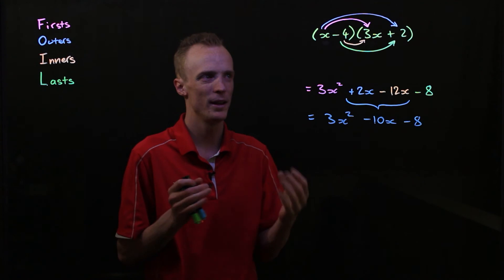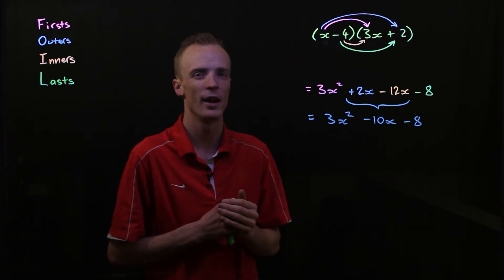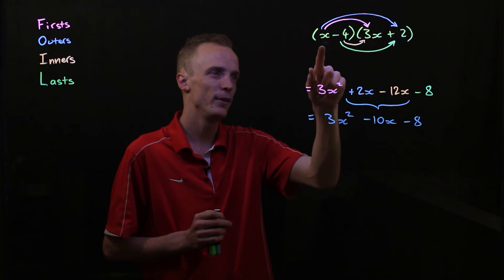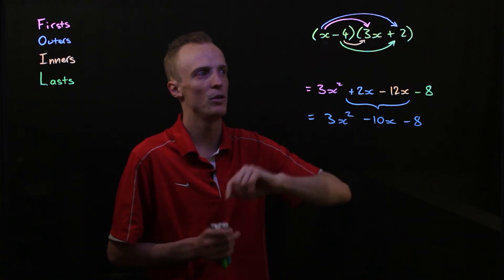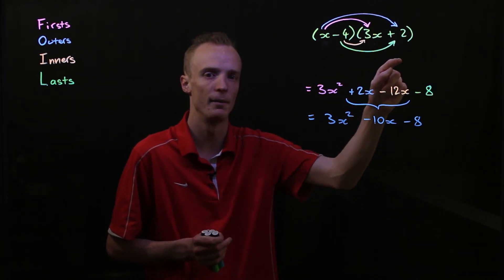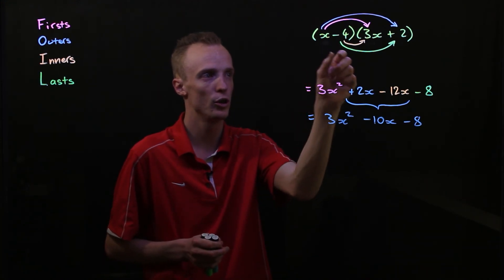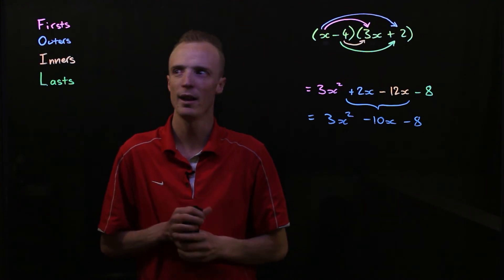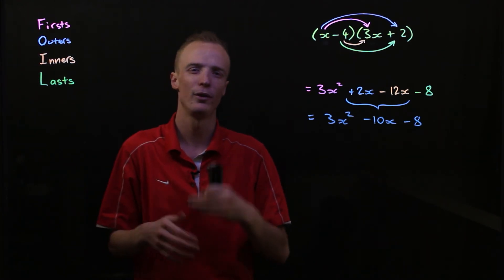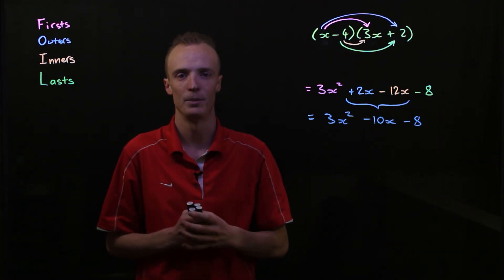So when we're expanding brackets, it's really important that what it means to expand brackets is everything in one bracket has to multiply everything in the other bracket. Now, if we've got a situation where we've got two terms in each of our brackets, we can use the acronym FOIL to help us go through the steps to expand these brackets.